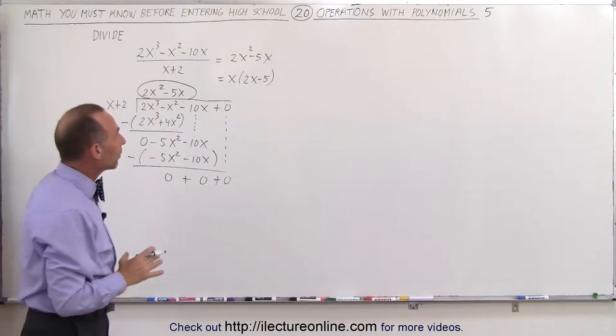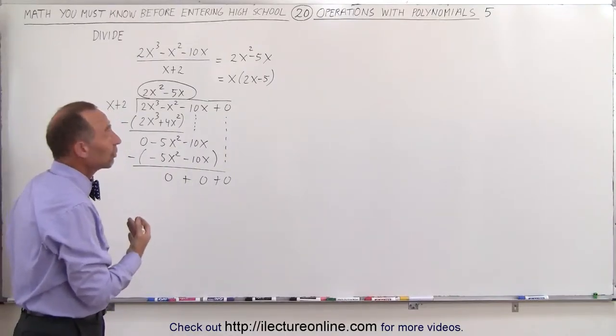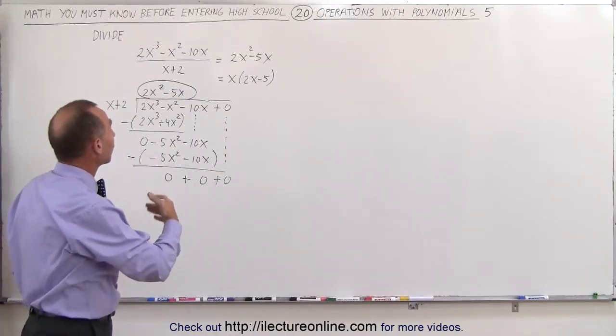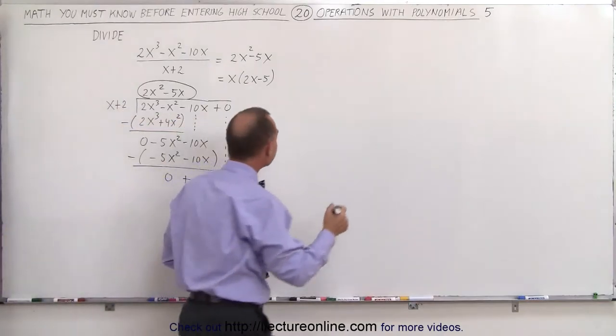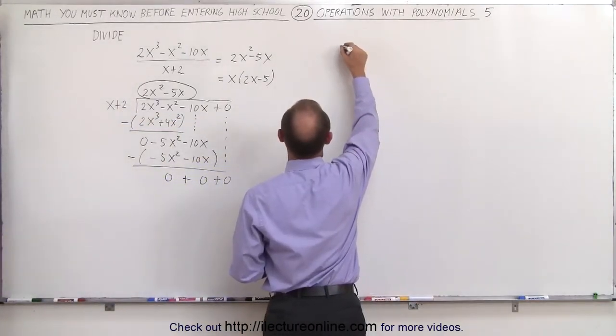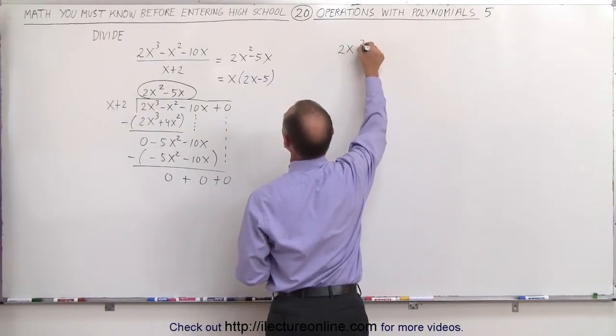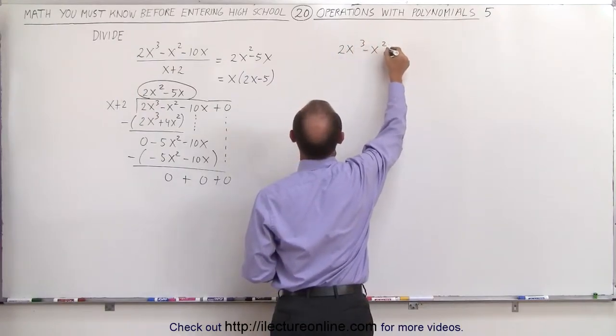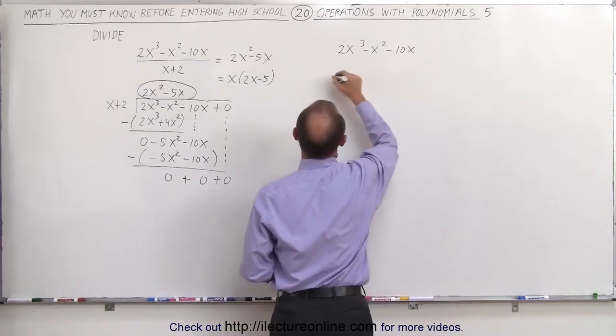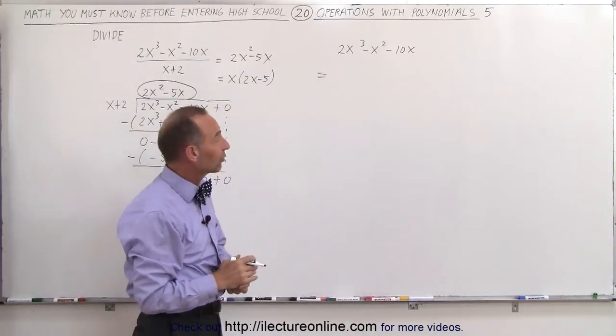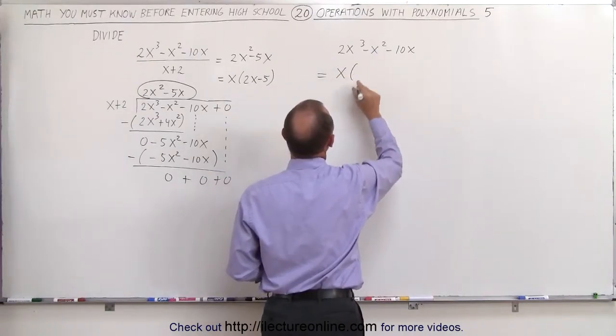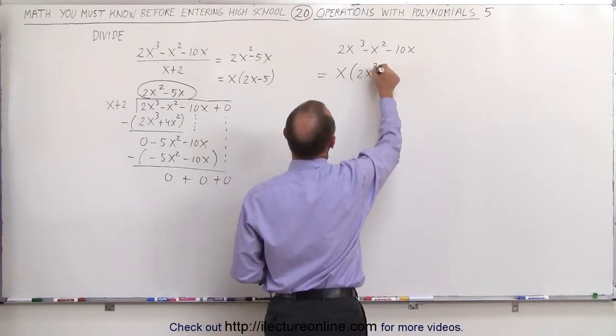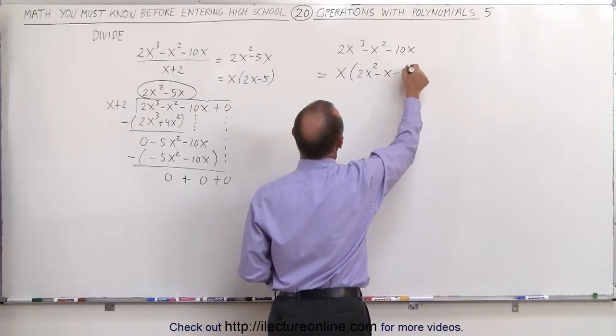So how else can we do this problem? Well, we can do that by factoring the numerator, and then dividing or simplifying if there's a common factor. All right, let's take the numerator, 2x cubed minus x squared minus 10x, and first we can see that you can factor out a common factor x, and we'll do that first. That leaves us with 2x squared minus x minus 10.